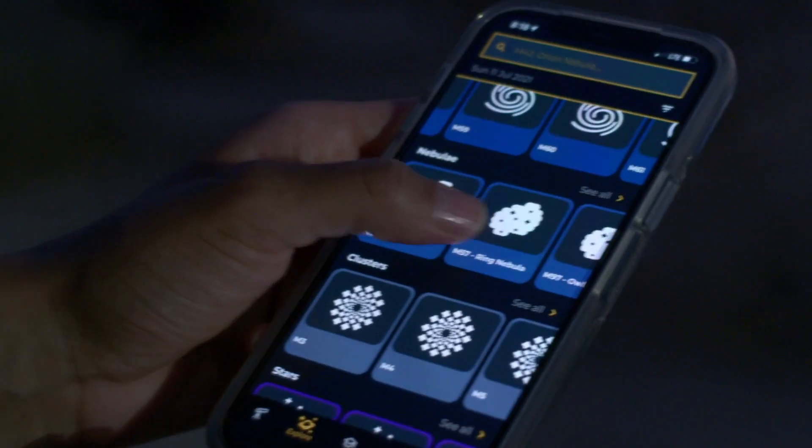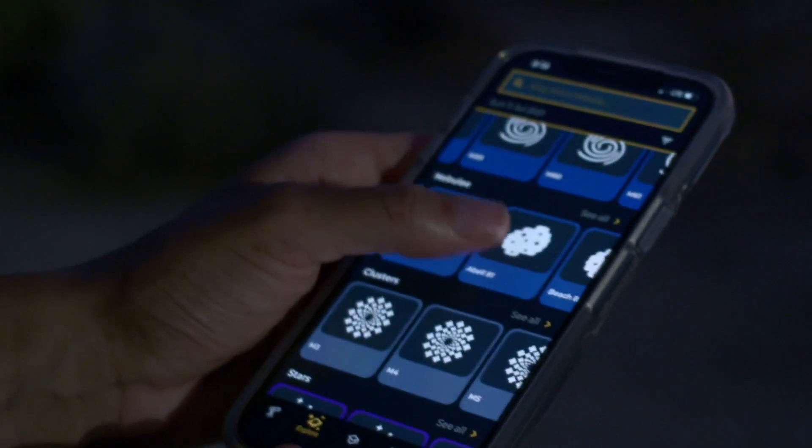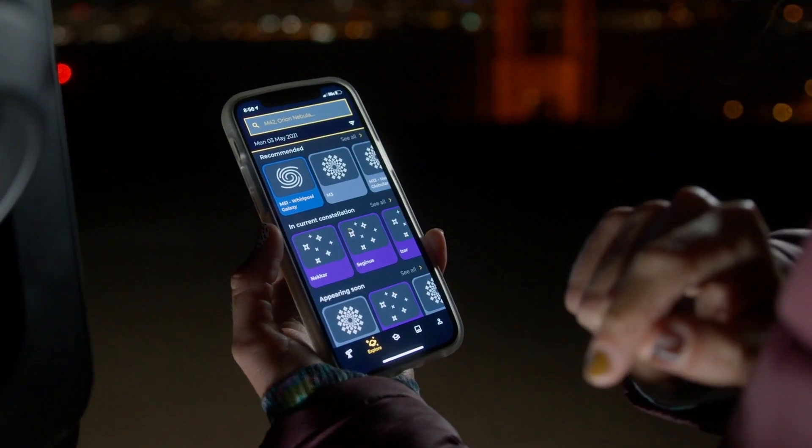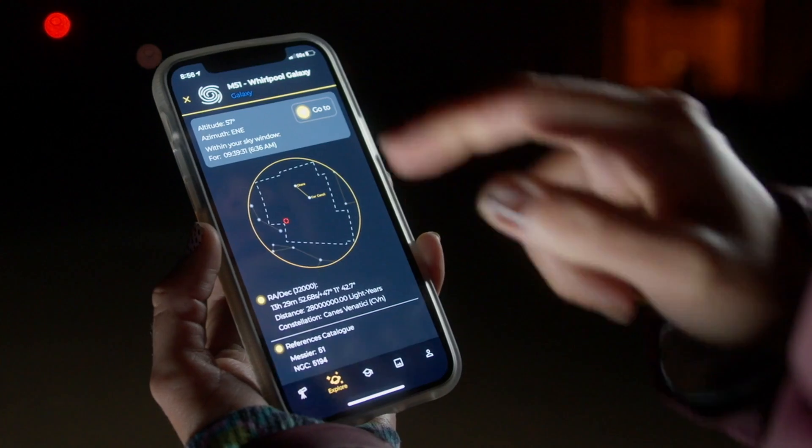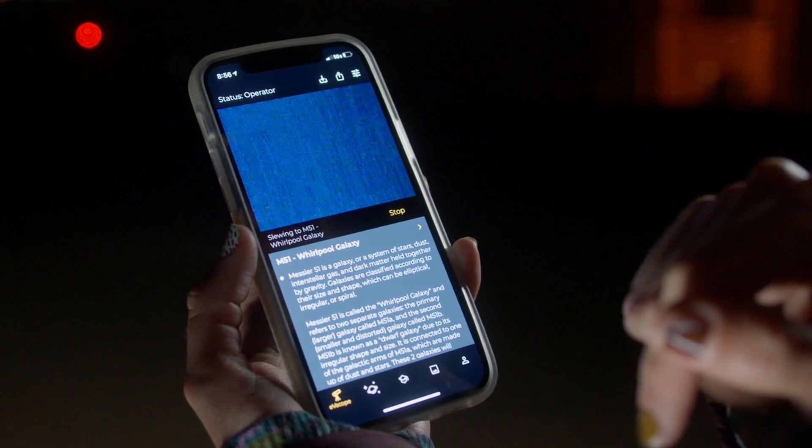Then open the catalogue to choose among thousands of objects based on your location and time. Point at an object in the night sky automatically with the go to button and get information about what you're observing while it's searching for it.